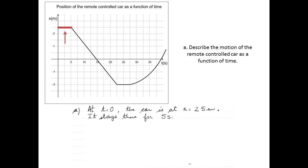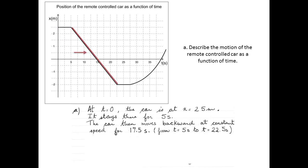The first thing we need to do is describe the motion of the remote-controlled car as a function of time. For the first 5 seconds, the car remains at x equal to 2.5 meters. We can tell that because the position-time graph is horizontal. From t equal to 5 seconds to t equal to 22.5 seconds, the car moves backward at constant speed, because the position-time graph is linear and diagonal.